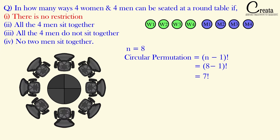Our circular permutation formula is n minus 1 factorial, that is 8 minus 1 factorial, which equals 7 factorial. So we can arrange 4 women and 4 men around this circular table in 7 factorial ways. That is the answer of the first part.